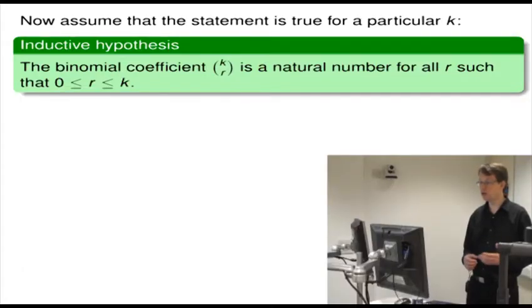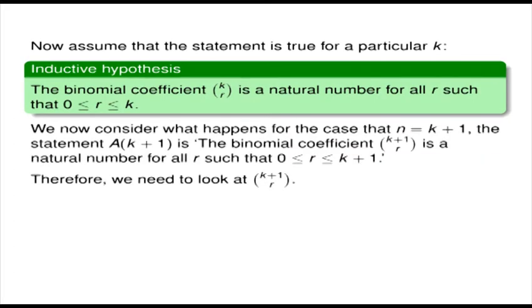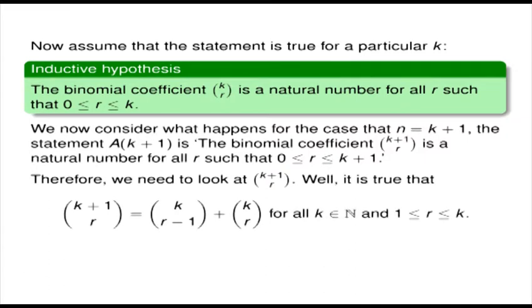Now let's do the inductive step. Assume the statement is true for a particular k — our inductive hypothesis: k choose r is a natural number for all r such that r is between 0 and k. We now consider the case n equals k plus 1. The statement A(k+1) is that k plus 1 choose r is a natural number for all r between 0 and k plus 1. It's true that k plus 1 choose r equals k choose r minus 1 plus k choose r, for all k in the natural numbers and r between 1 and k.